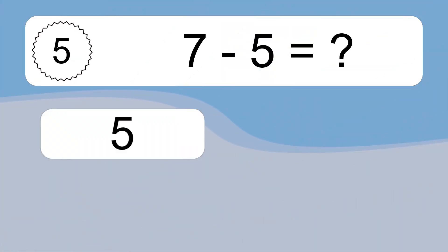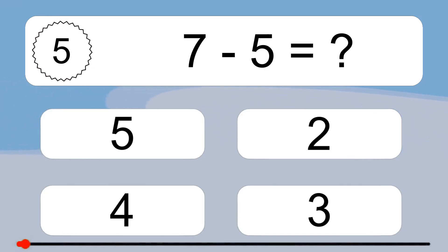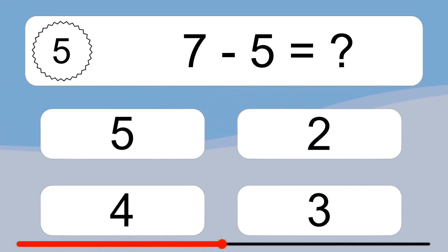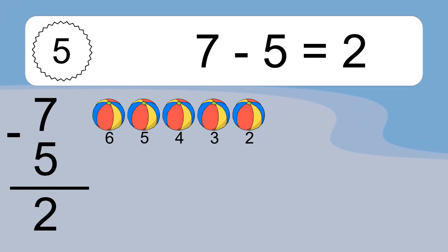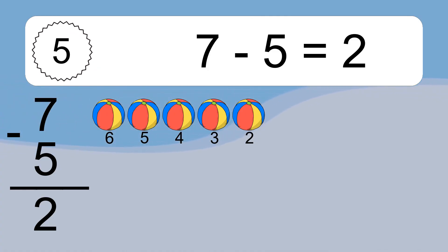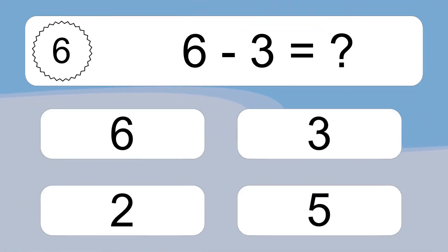7 minus 5 equals what? 6, 5, 4, 3, 2. 7 minus 5 equals 2.